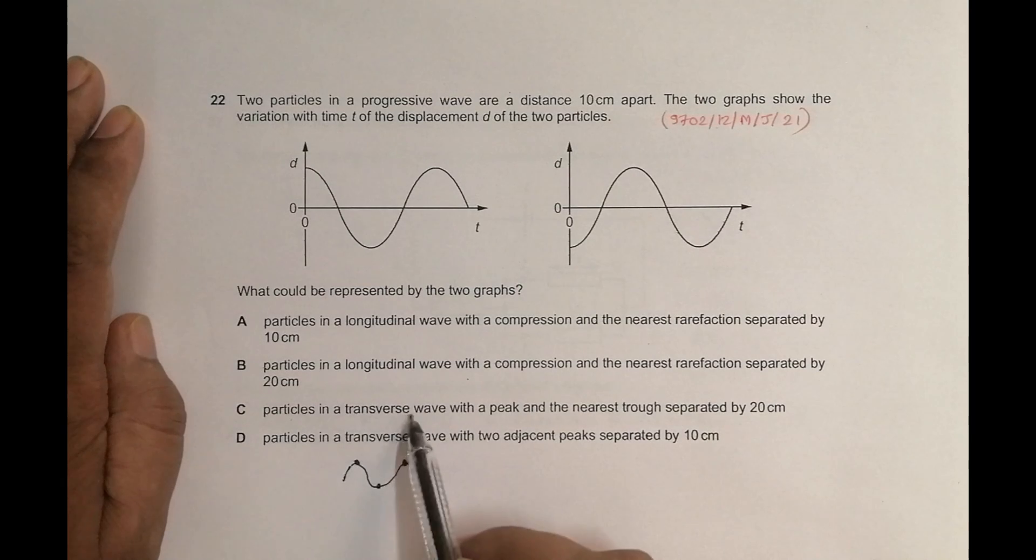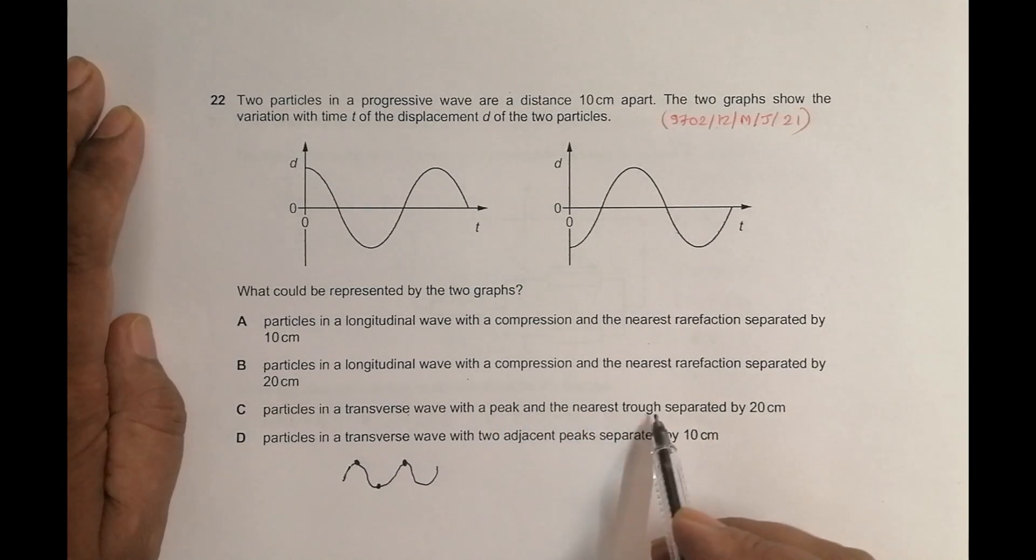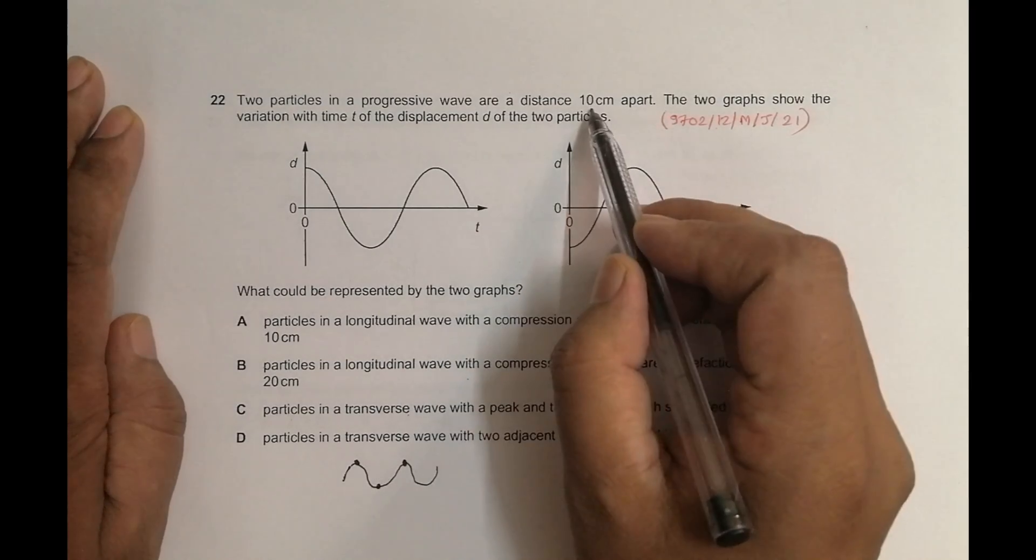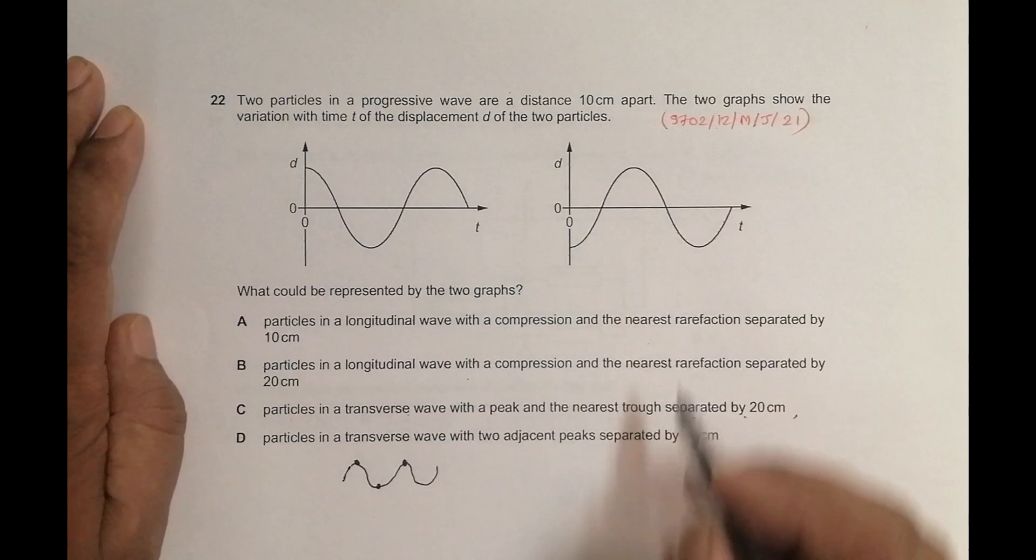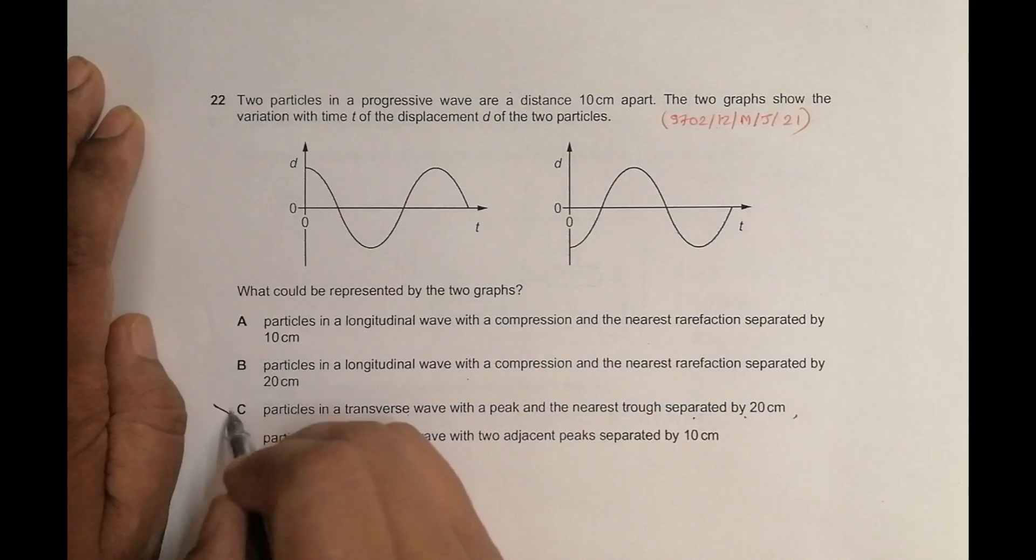See, particles in a transverse wave with a peak and nearest trough, nearest trough, it seems okay, separated by 20 cm. It is not okay because it's 10 centimeter. So the particle should be between crest and trough. It should be at crest and trough, and separated by 10, which is not correct here. So this is not correct.